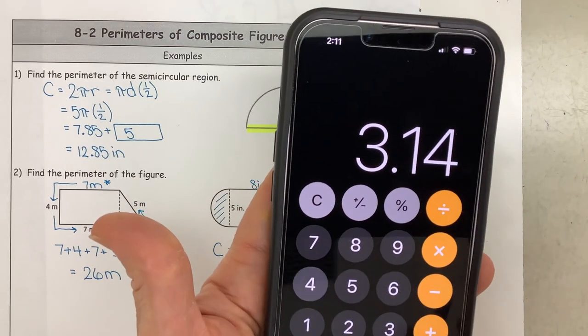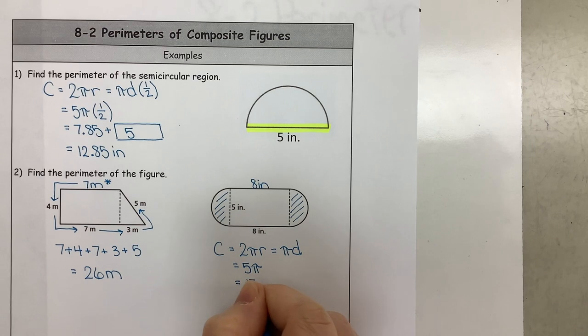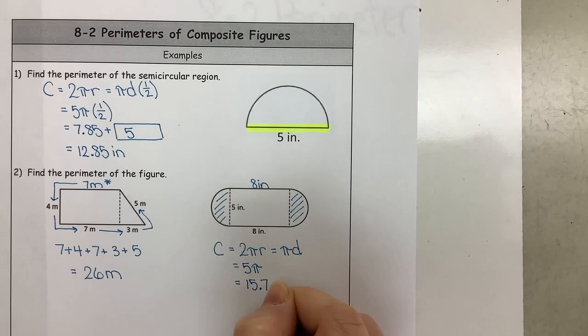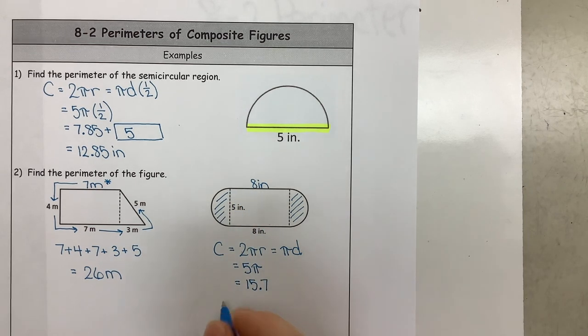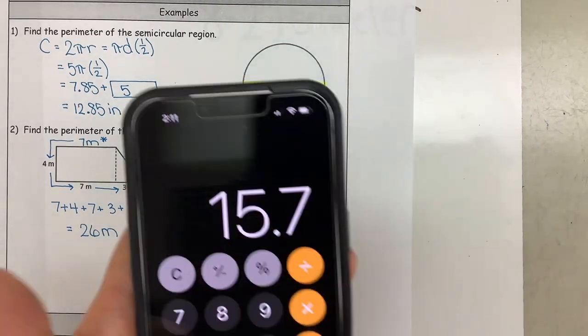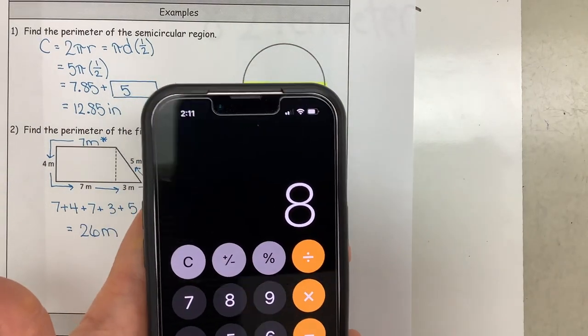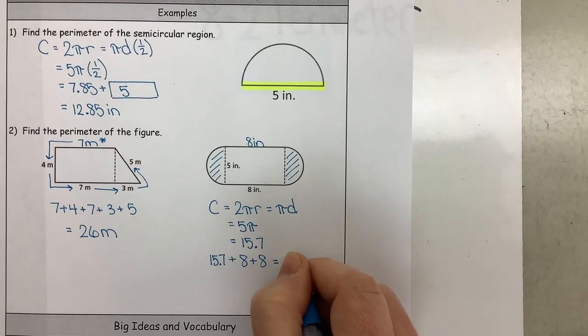Alright, and we're going to multiply that. So we're going to do 5 times 3.14, we get 15.7. And we're not done yet because we now need to add on this piece and this piece. So we're going to add to this 8 plus 8. So that 15.7 that we found for the circles is going to be added to these straight pieces. When we do that, we're going to get 15.7 plus 8 plus another 8, and that is 31.7 inches.